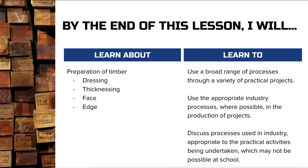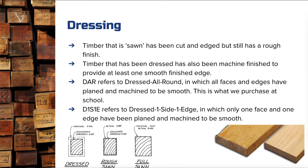Dressing isn't the process of putting clothes on timber — it's actually about taking material off the timber, so it's almost an undressing process. When a tree gets cut down, it's cut as a log, sent to the timber yard, debarked, and then immediately sawn — either quarter sawn, back sawn, or live sawn. That's its initial rough sawn phase.